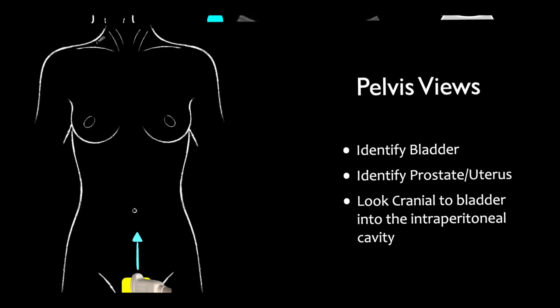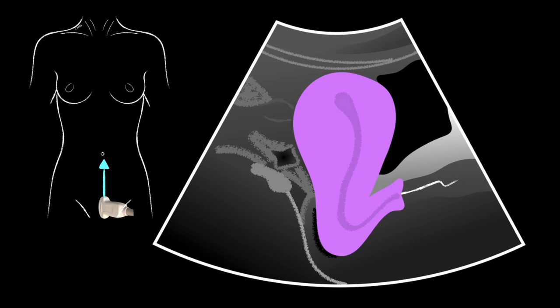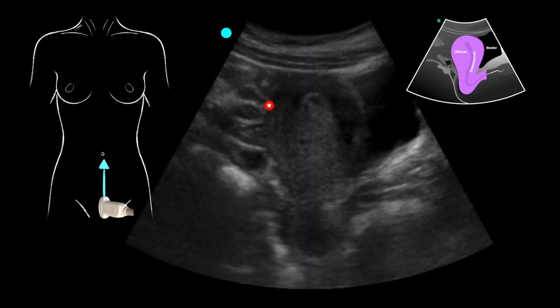In a female patient with an anteroverted or anteroflexed uterus, we're going to look for free fluid along the posterior wall of the uterus. In females of reproductive age, a small amount of free fluid can be normal if they're still ovulating. To differentiate, we cut the uterus into thirds: anything in the lower third could be physiologic and normal, but if free fluid extends into the middle to upper third, consider it pathological until proven otherwise.